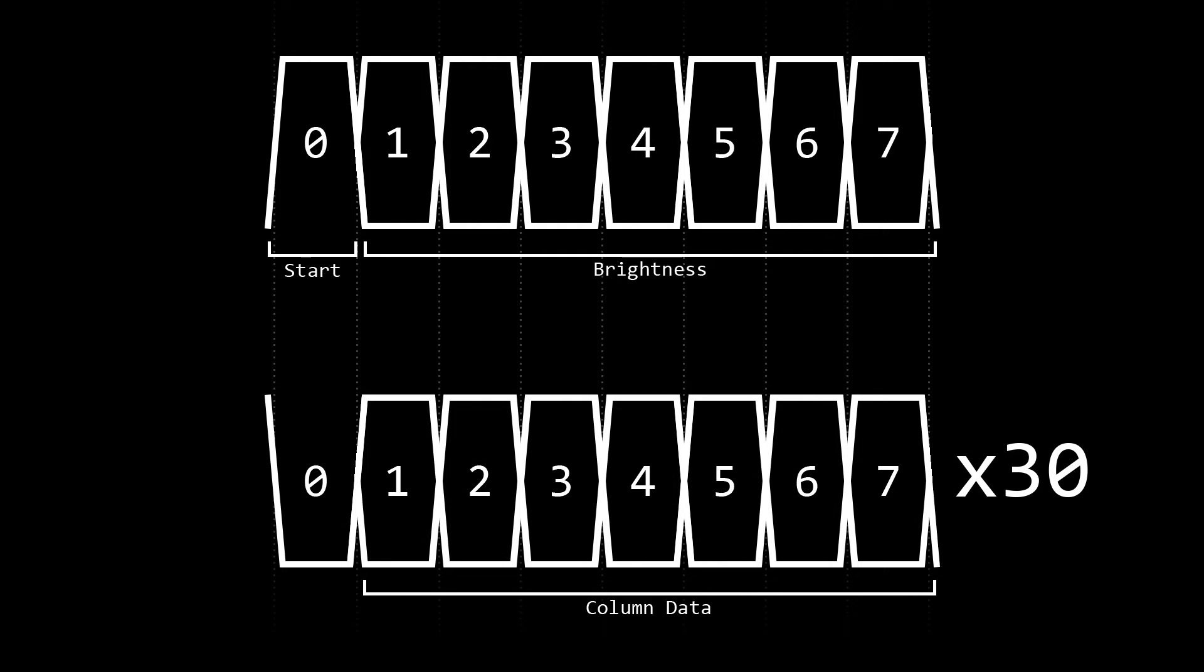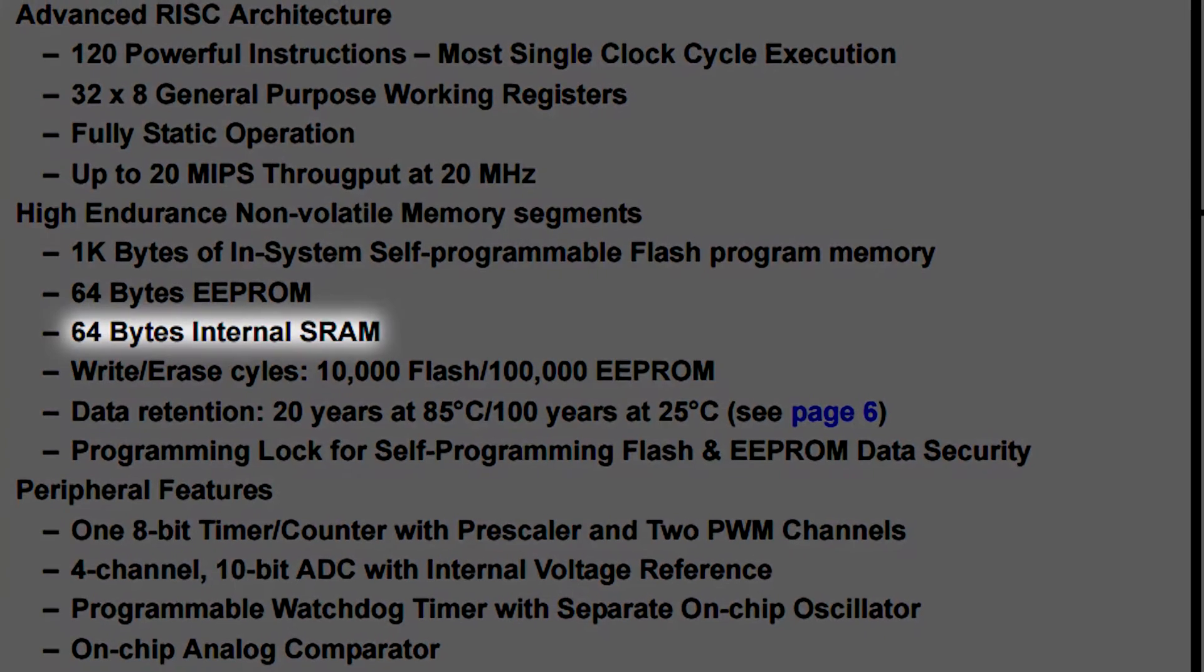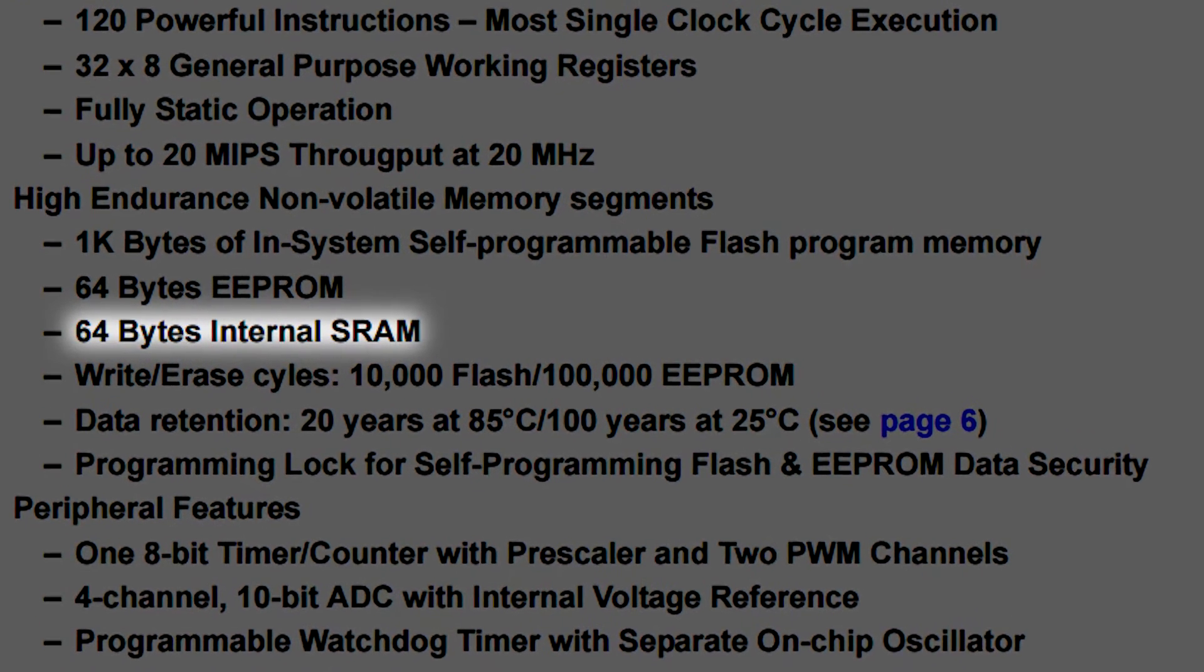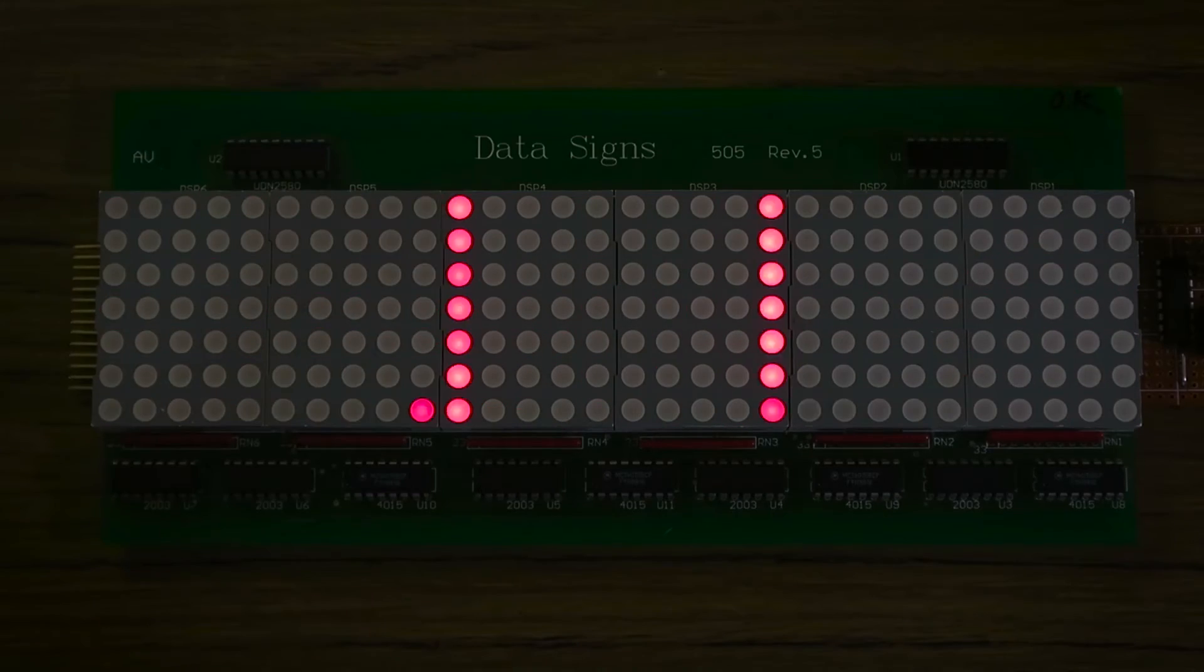The following 30 bytes contain pixel data. I wanted to double buffer the display to reduce any flicker on transmission, but the ATtiny has only 64 bytes of RAM, which is not enough to fit multiple buffers. But the flicker is unnoticeable, as the transmission only takes a couple of milliseconds.